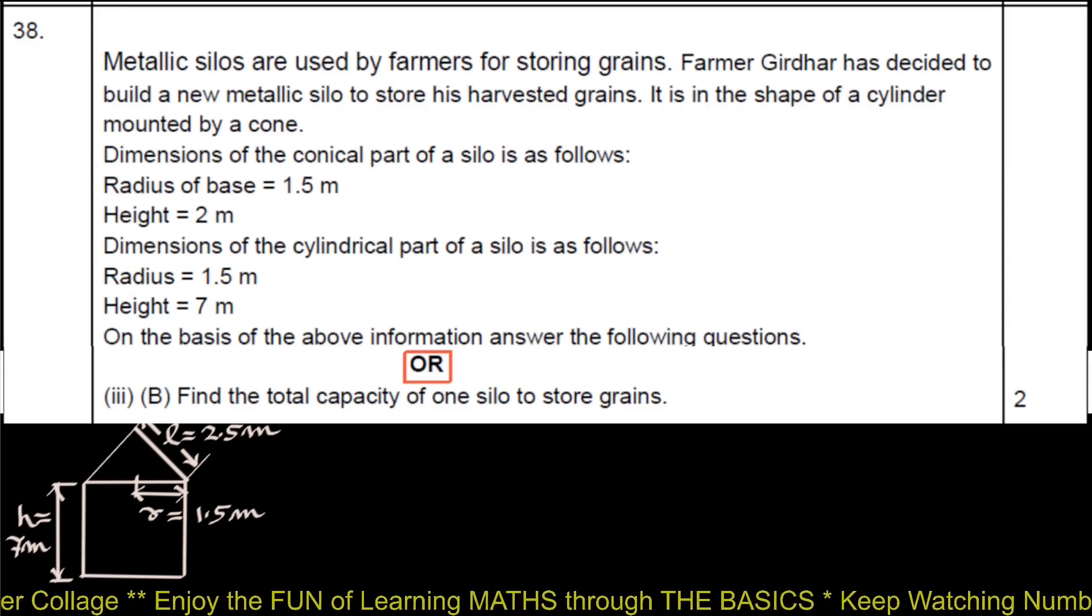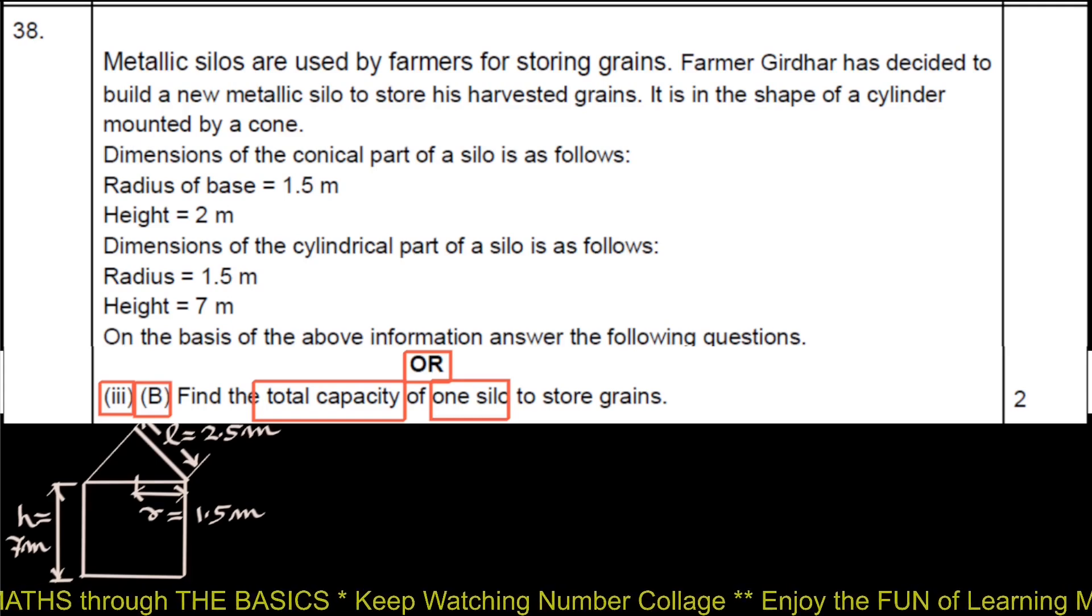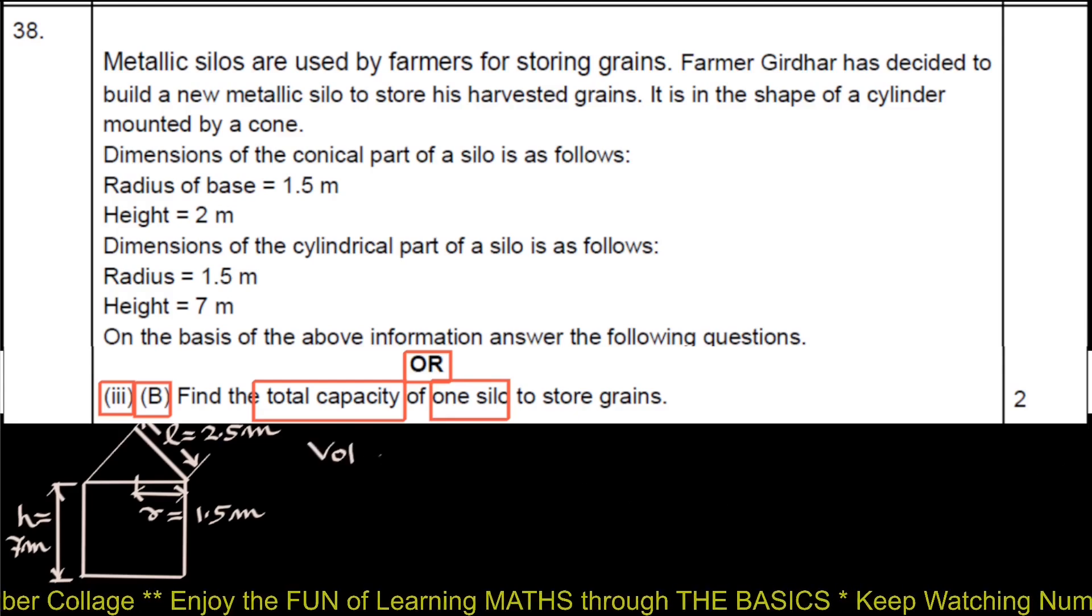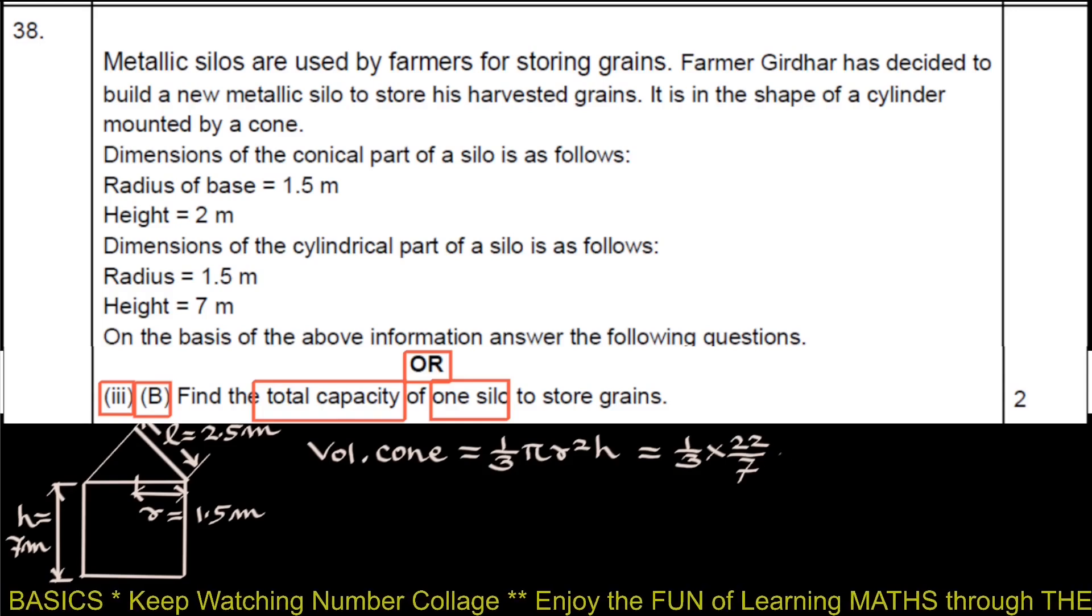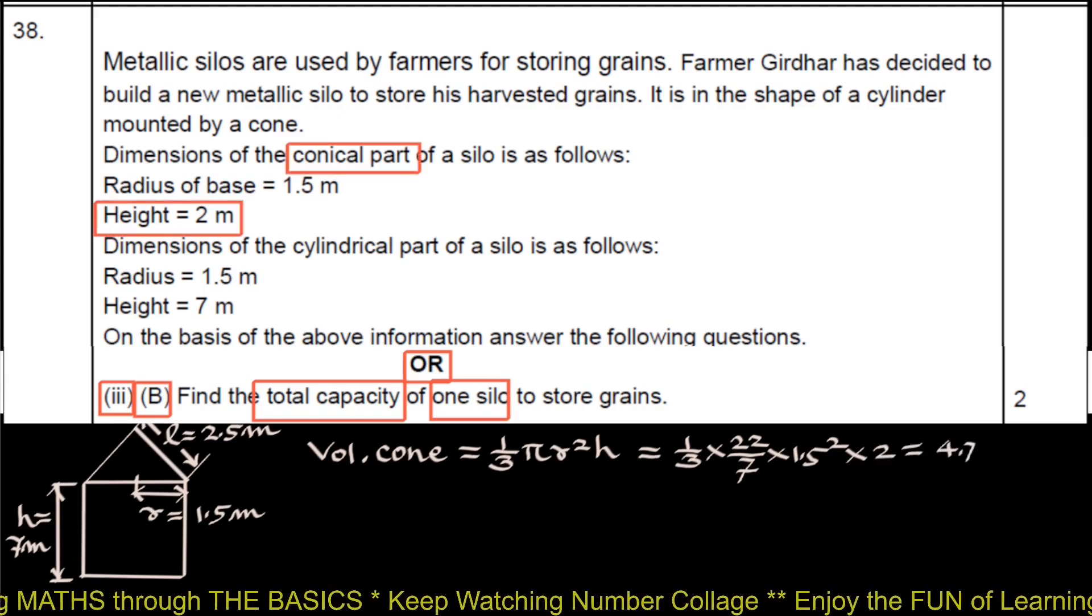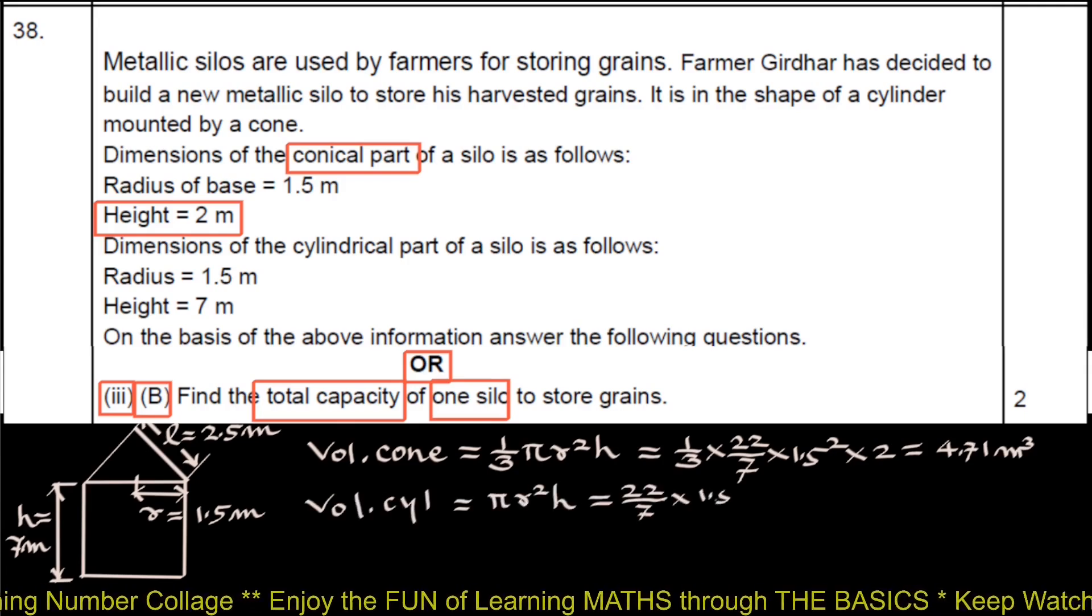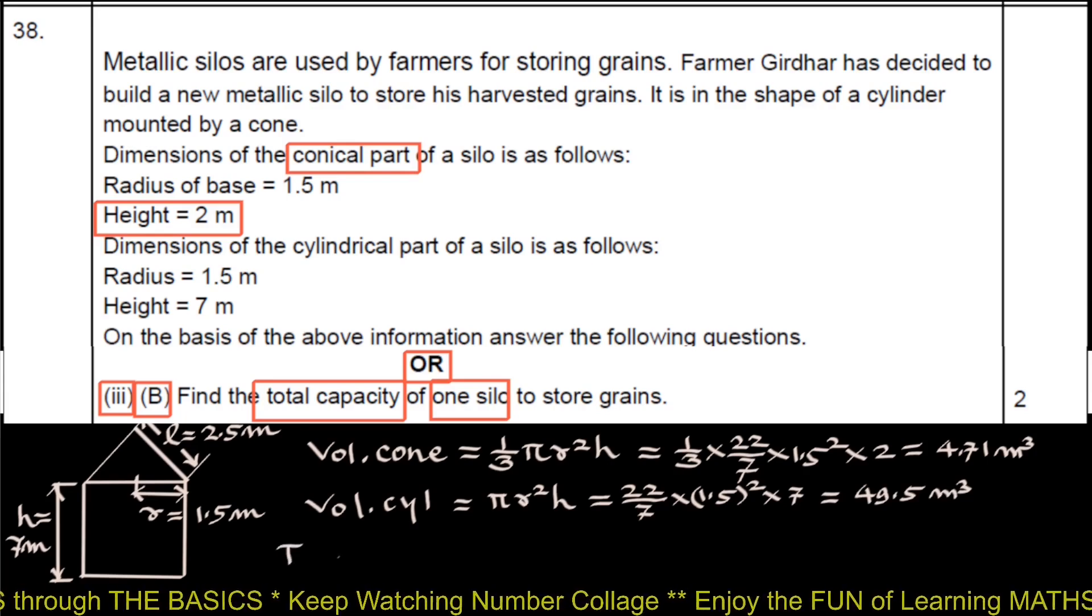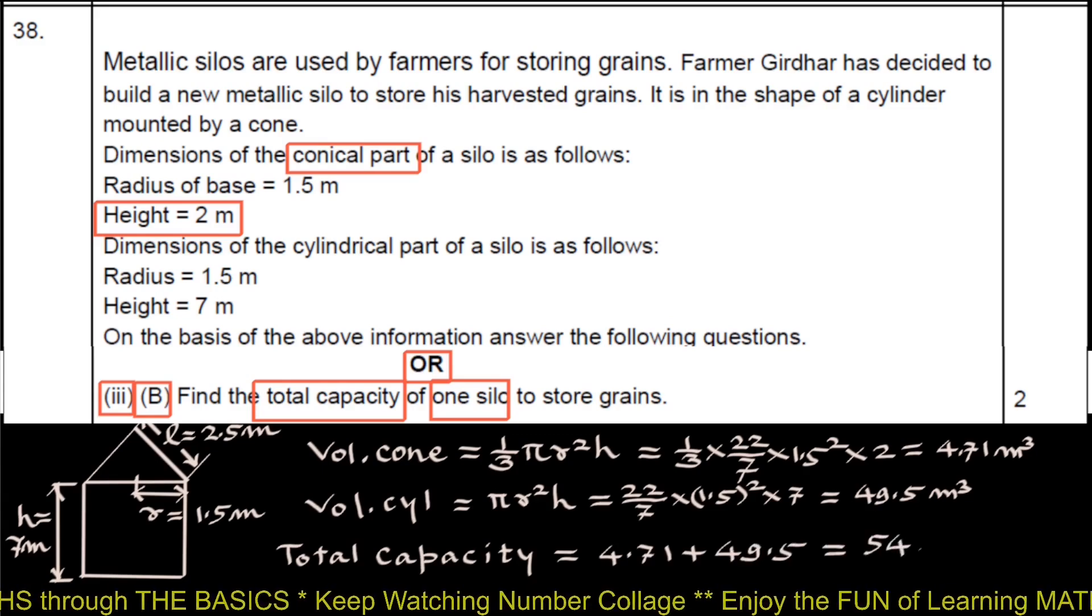Or third sub question B: We have to find total capacity of 1 silo to store the grains. We have to find volume of the conical part and the cylindrical part and add them together. So first, volume of conical part is 1 third π R square H, 1 third into 22 upon 7 into 1.5 square into height of conical part 2 meter, which is 4.71 meter cube. And volume of cylindrical part is π R square H, 22 upon 7 into 1.5 square into 7 meter, which is 49.5 meter cube. So the total capacity of the silo is 4.71 plus 49.5, which is 54.21 meter cube.